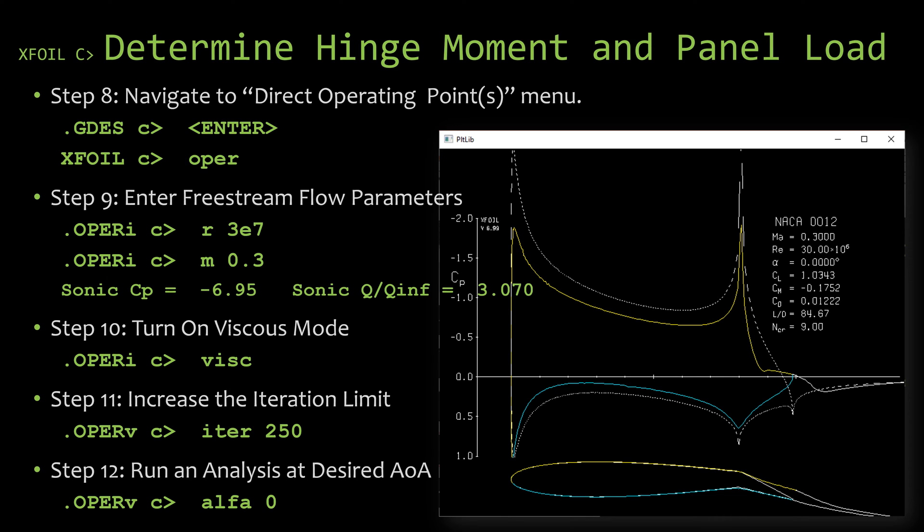Now, if you use the command to find out the flap hinge moment right now after step 11, you'll notice it doesn't give you any results. It tells you zero, zero, zero. That's because it doesn't have any information about the airflow around the surface. So we need to run an analysis at the desired angle of attack. At this point, I'm just looking at what the flap deflection looks like, not the angle of attack, so I'm going to run it at an angle of attack of zero.